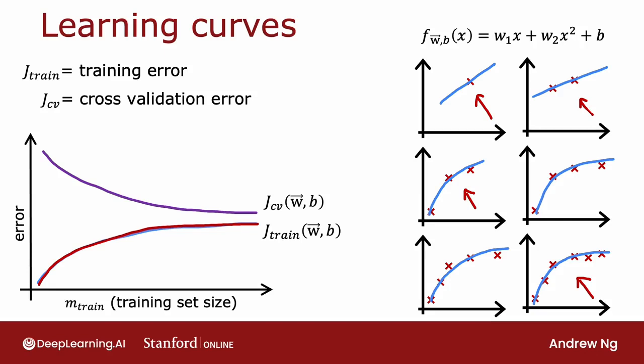Notice one other thing about these curves: the cross-validation error will be typically higher than the training error, because you fit the parameters to the training set. And so you expect to do at least a little bit better — or when M is small, maybe even a lot better — on the training set than on the cross-validation set.